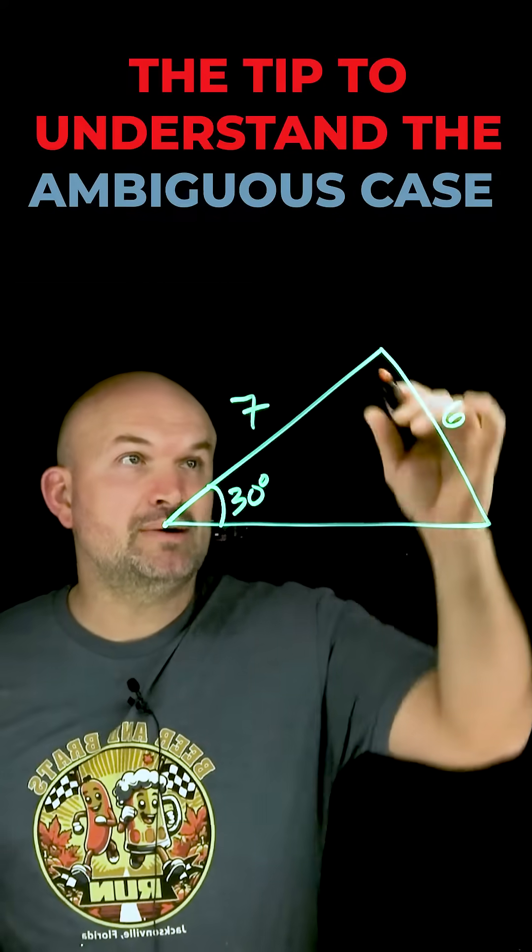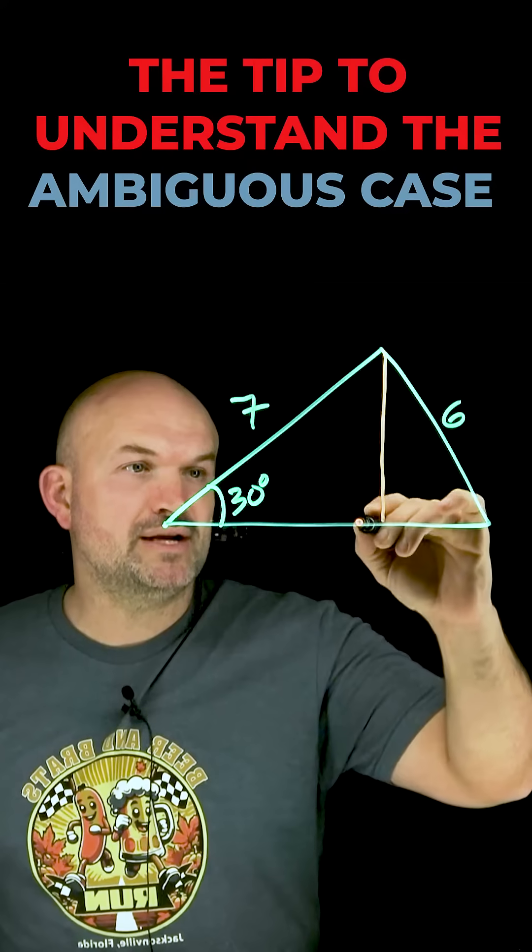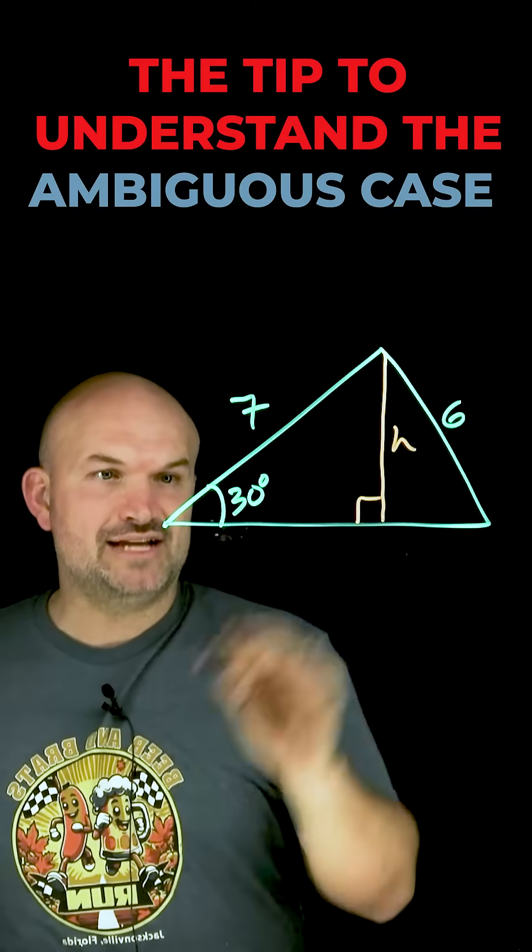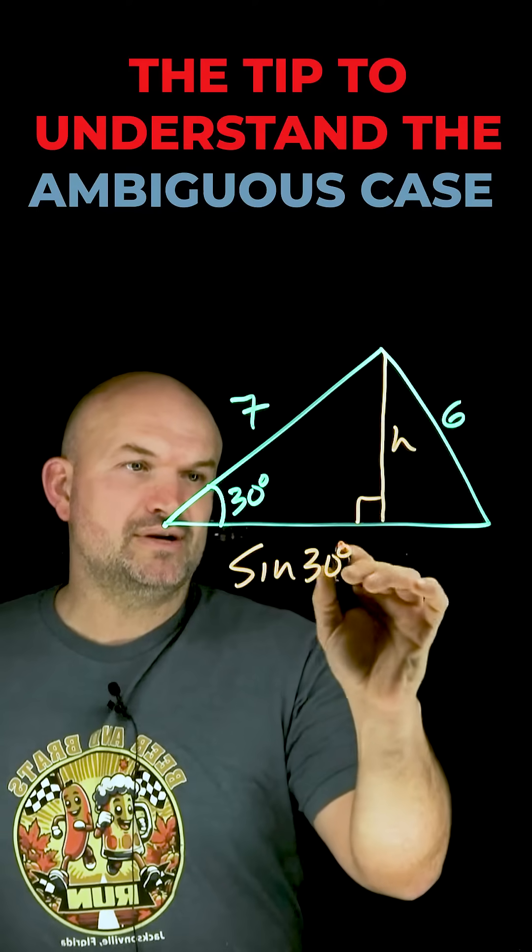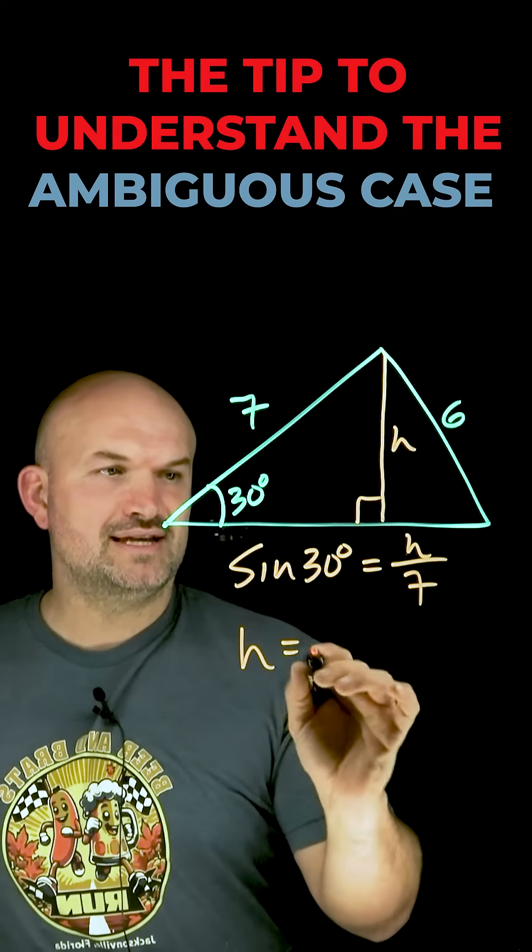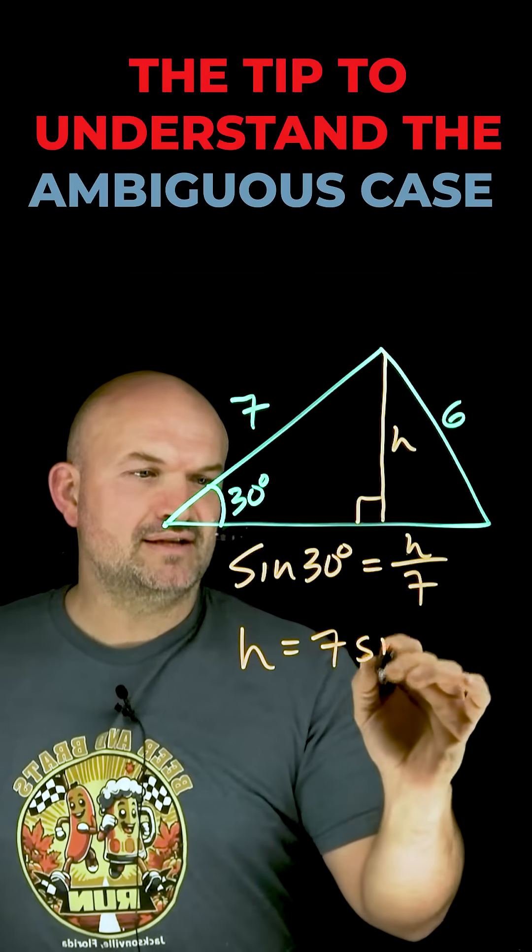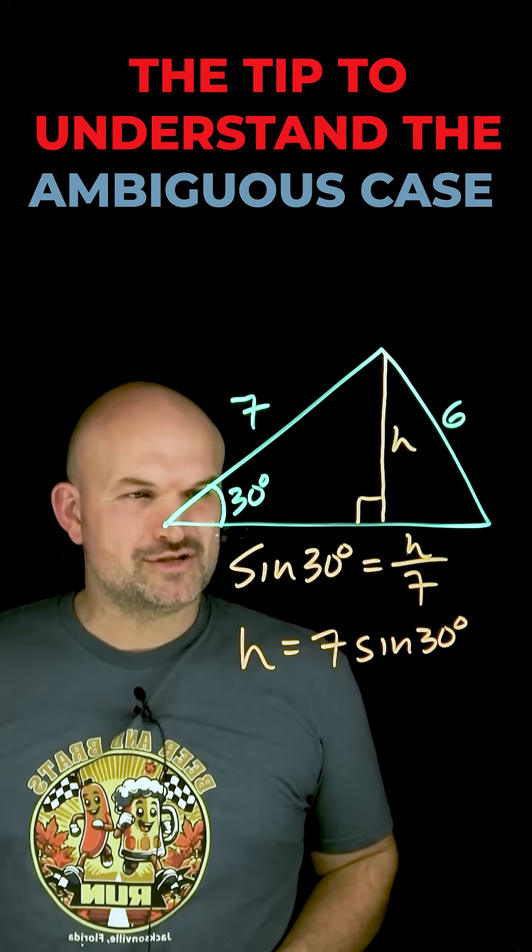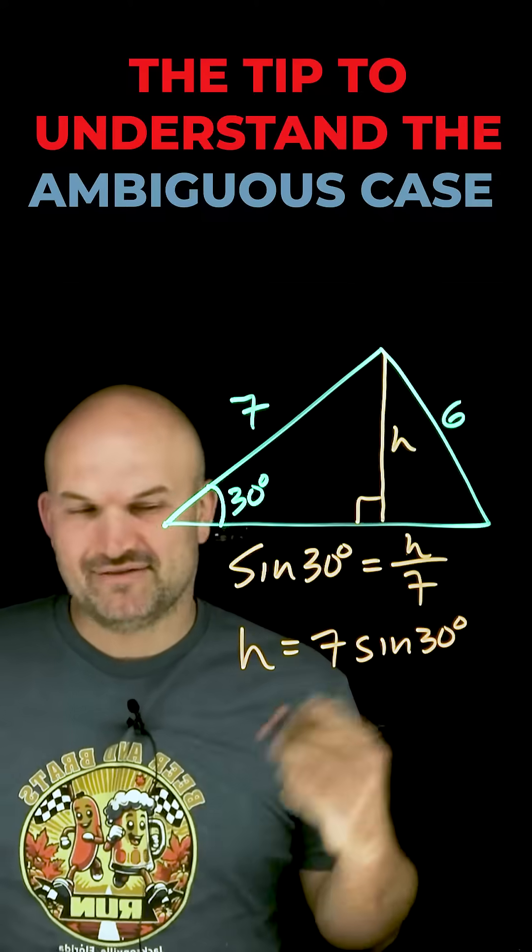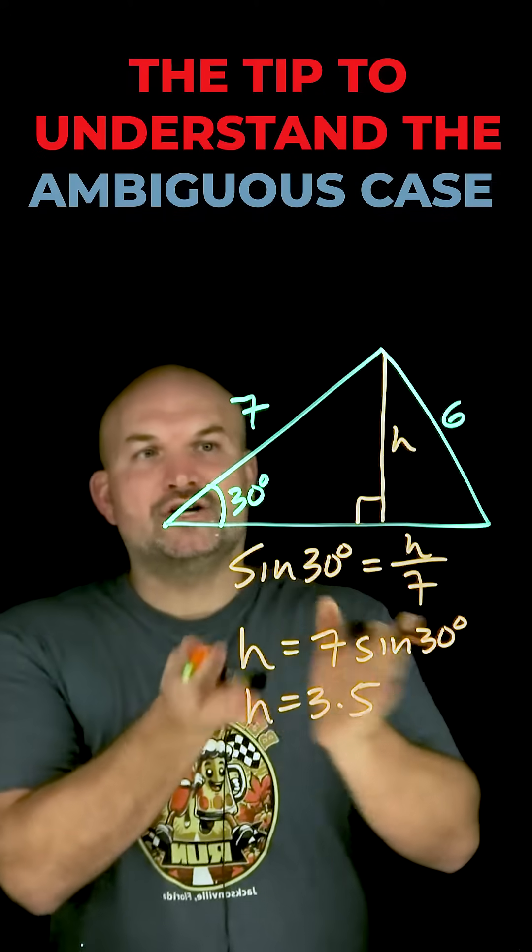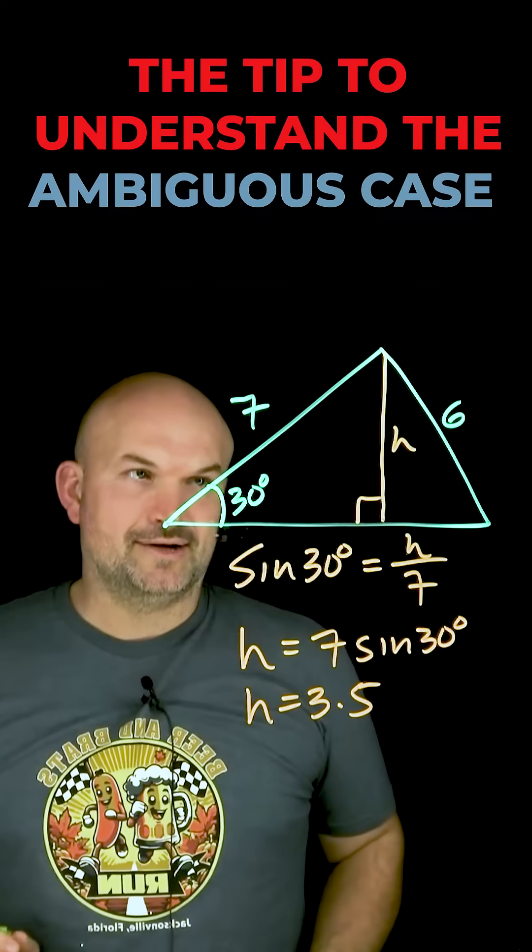That all comes into knowing the height. So if I draw a nice perpendicular line here, I create a right triangle. I can now say, if this is H, that the sine of 30 degrees equals opposite over hypotenuse. Therefore, height is equal to seven times the sine of 30 degrees. And hopefully you know that sine of 30 degrees is going to be one half. One half times seven is going to be 3.5. So how can I now use this information to help me understand what exactly is going on here?